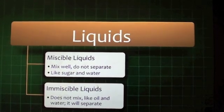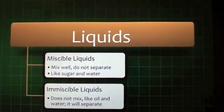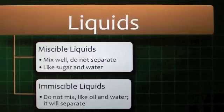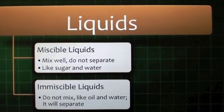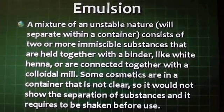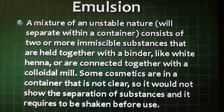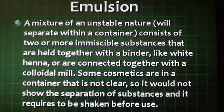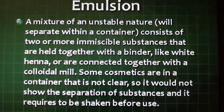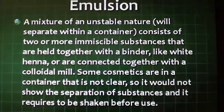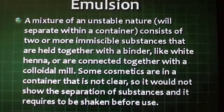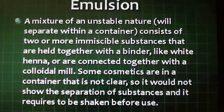Liquids are divided into two types: miscible and immiscible. Miscible liquids mix well and do not separate, like sugar and water. Immiscible liquids do not mix, like oil and water — they will separate. An emulsion is a mixture of an unstable nature that will separate within a container. It consists of two or more immiscible substances held together with a binder, like white henna, or connected with a colloidal mill. Some cosmetics come in opaque containers to hide separation, and require shaking before use.